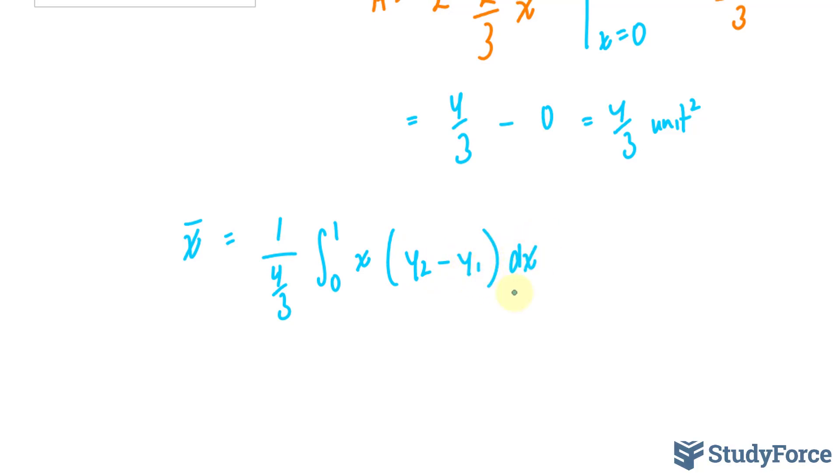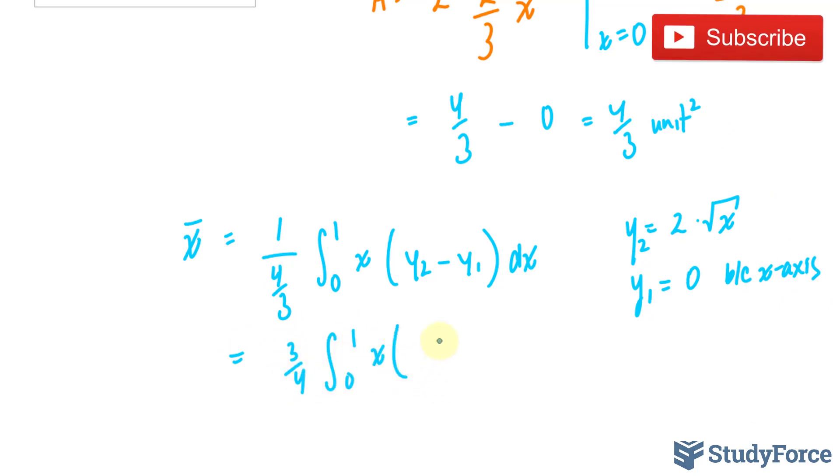I said my y2 was the upper function, so y2 is equal to 2 times the square root of x, and y1 is 0, because of the x-axis. And we'll substitute these values, this becomes 3 over 4, the integral between 0 and 1, x times 2, times the square root of x, minus 0, dx.